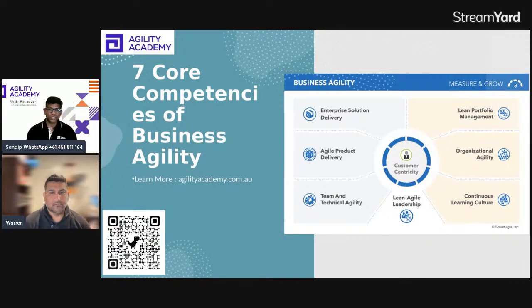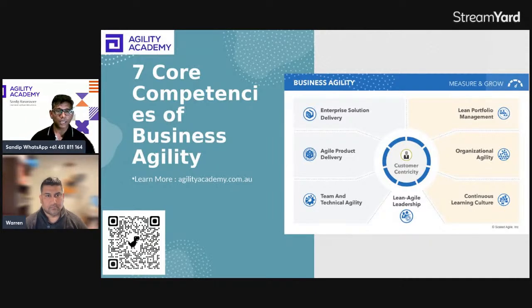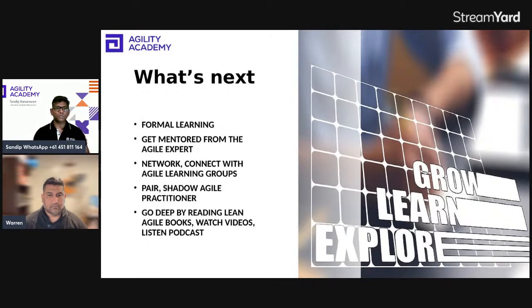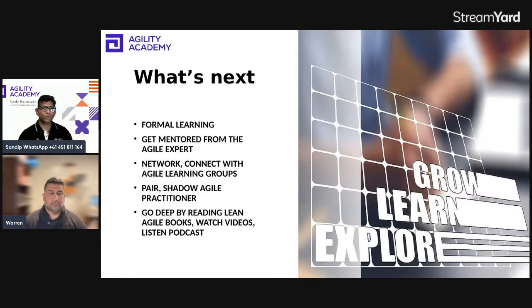This brings us towards the end of today's session where we have briefly touched on seven core competencies required for any organization to compete in today's marketplace. If you need to explore one or many of those, feel free to reach out by scanning the QR code or visit agilityacademy.com.au. We have a global community where we support each other. If you are leading an agile transformation, our agility academy consultant experts can guide you. As a professional, if you want to grow your career, you can seek our mentorship, network with alumni members, and shadow agile practitioners. Attending courses and reading agile books is also highly recommended.